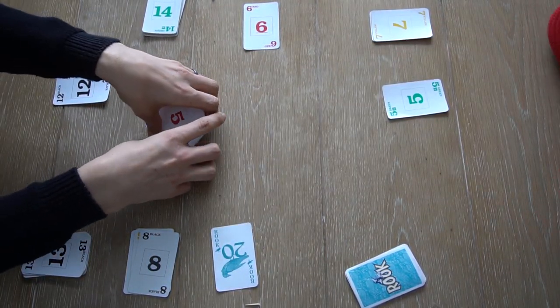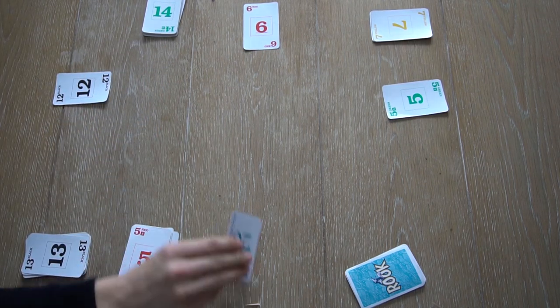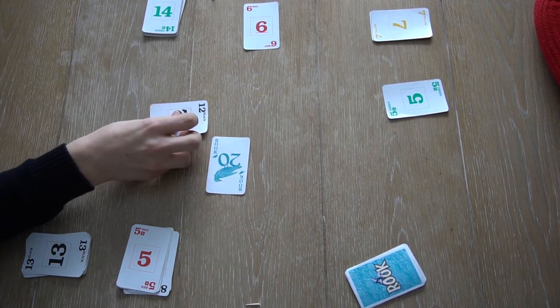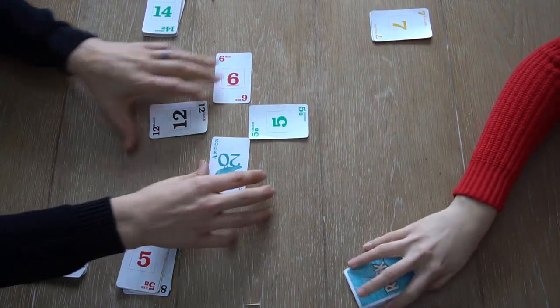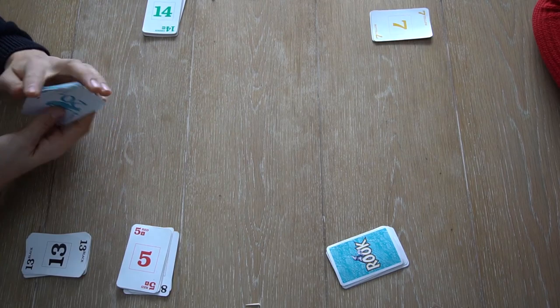And the rook card is an ultimate trump that beats any card. There's only one of those in the deck. This was the last trick for this round, so player 4 also gets the cards in the nest.